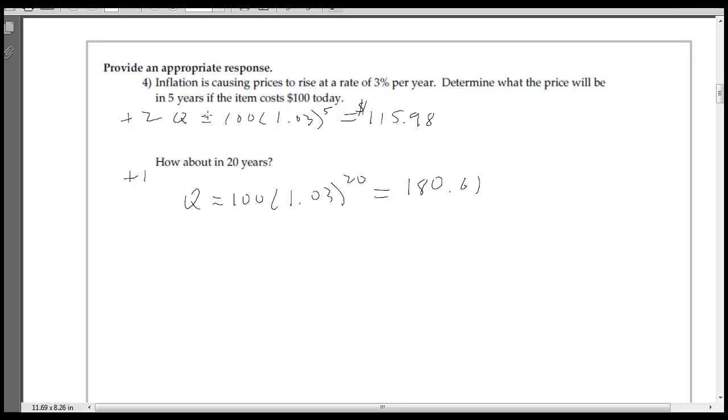And number 4, we're going to use the same formula again. 3% per year, 5 years, so it's 100 bucks, 1.03 to the 5th, there it is. 20 years, 1.03 to the 20th times 100, so there's the two answers there.